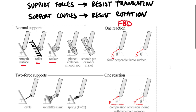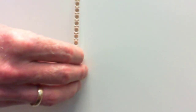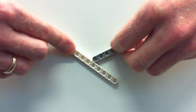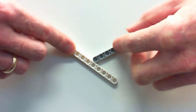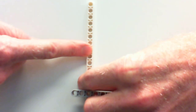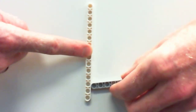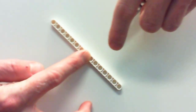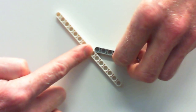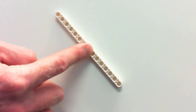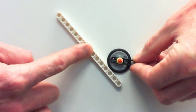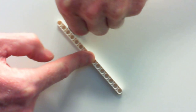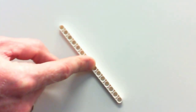Now let's look at some of these physically. Here is our surface — this white piece of Legos. For a smooth, friction-free contact between a member and that surface, the normal force is always perpendicular to the surface. So if the surface is vertical, the force is horizontal. No matter the angle at which this member contacts it — if I rotate it around — I still end up with the normal force perpendicular to the surface. Normal is always perpendicular to a surface.